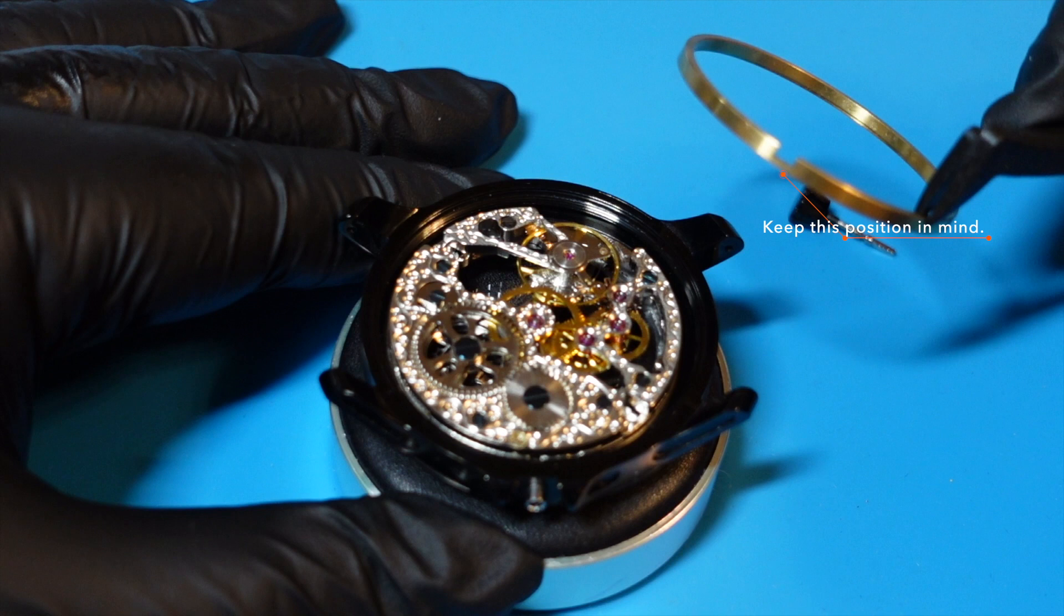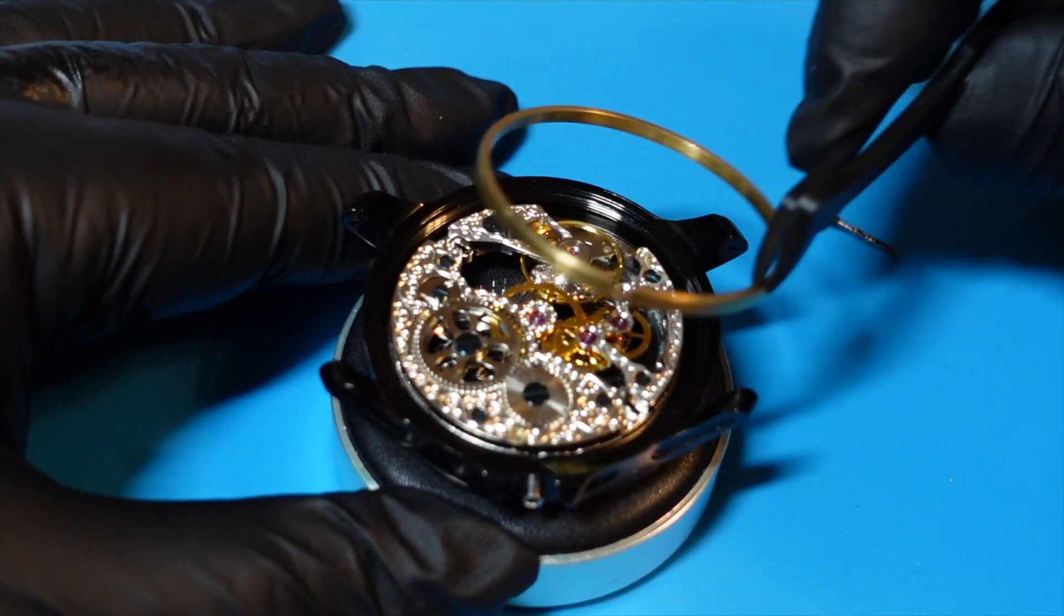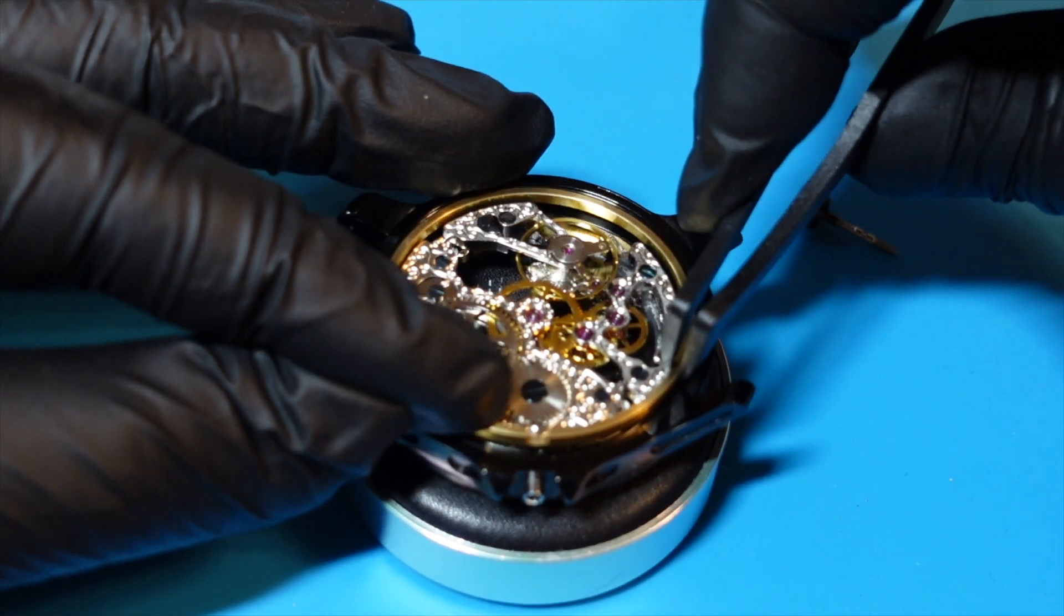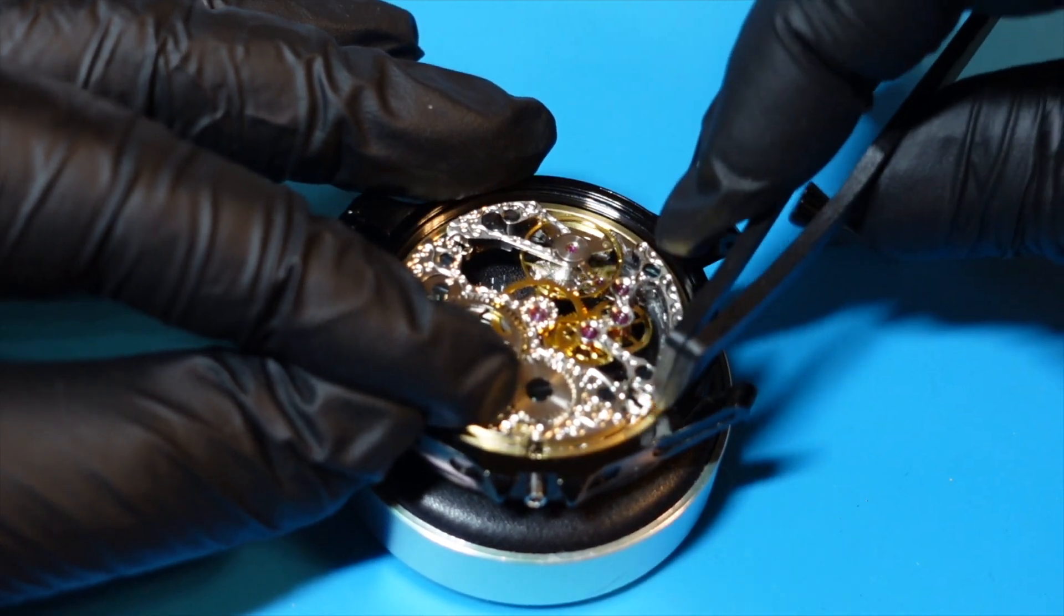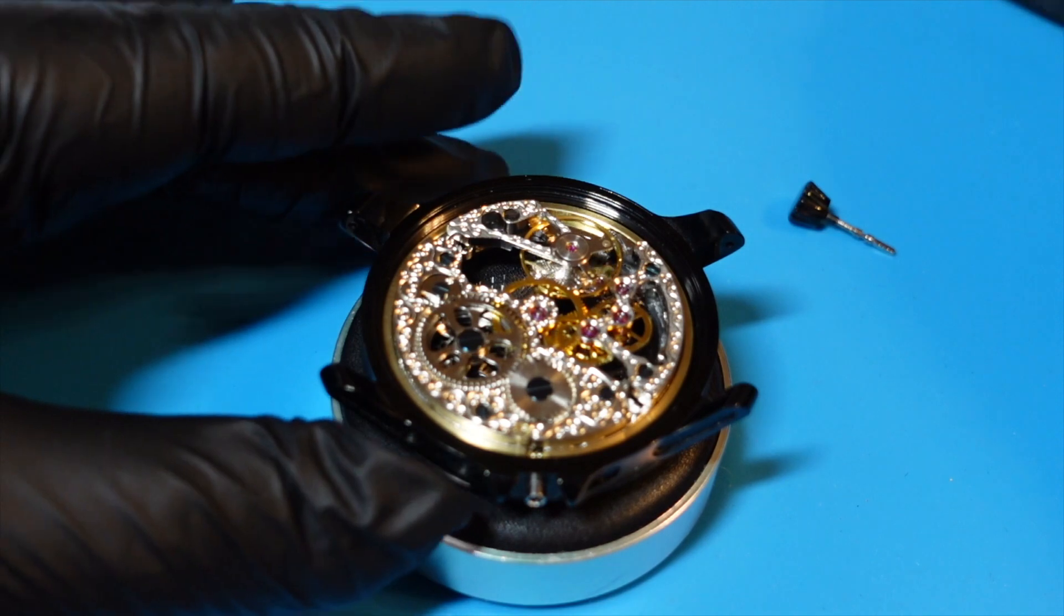Installing the spacer ring will help keep the movement in place. Please keep in mind to place the ring in the exact position I am showing you here. Otherwise, you will end up wondering why the crown is stuck or it will not turn at all.